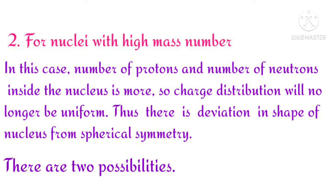When the nucleus has equal numbers of neutrons and protons, the charge distribution doesn't need to be non-uniform. There is no force to break spherical symmetry, so the shape remains spherically symmetric, with no deviation. This gives two possible cases.